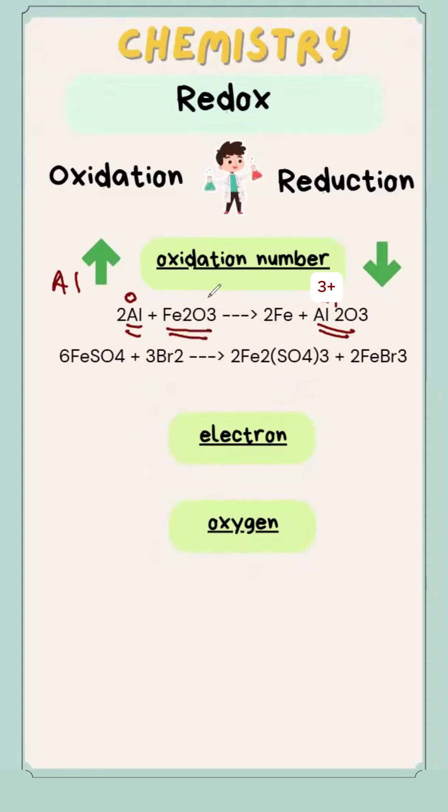While iron 3 oxide is initially 3 plus oxidation number, at last, it becomes atom that has zero oxidation number. That's why it's reduction.